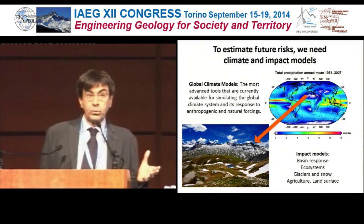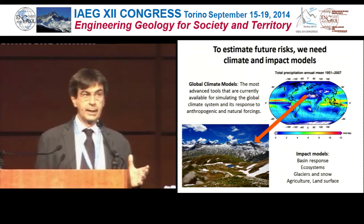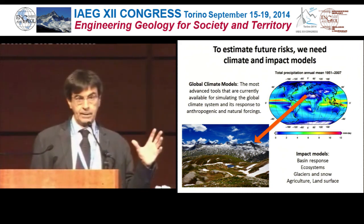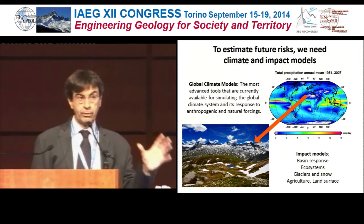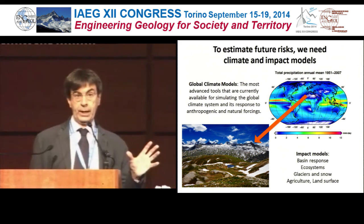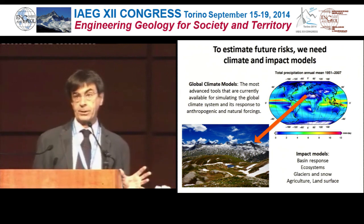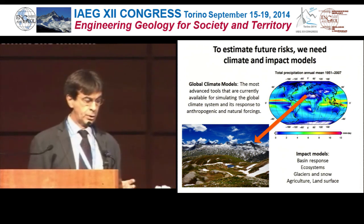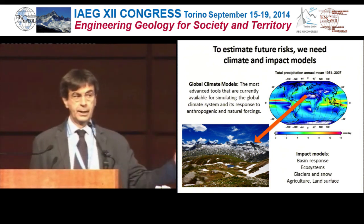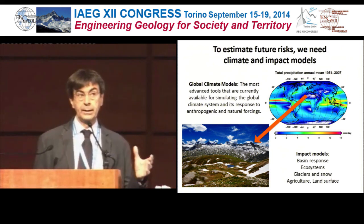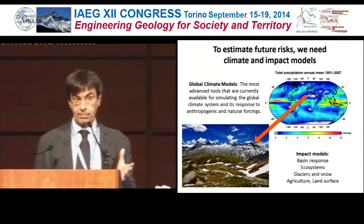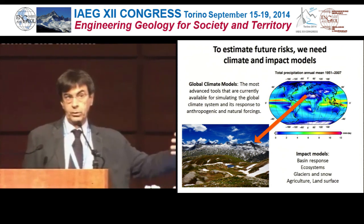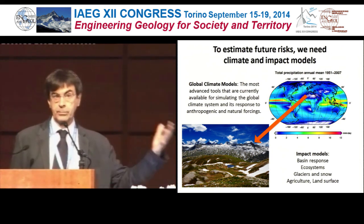When we try to estimate the future effects of climate change and climate variability on land surface processes, we typically start from a global climate model. It's a very imperfect tool, but the only tool we have to make projections for the future, which are global with high enough spatial and temporal resolution. There are international programs such as the Climate Model Intercomparison Project, now at its fifth version. All these results can be downloaded and used to drive impact models for land surface, ecosystems, floods, and so on.